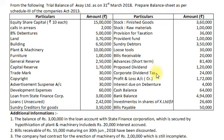Advances for Short Term will be recorded as an asset under short-term loans and advances. Proposed Dividend and Corporate Dividend Tax will be recorded on the liability side as short-term provisions. Profit and Loss Account Credit Balance will be recorded on the liability side as Reserves and Surplus. Interest Due on Debentures will be recorded on the equity and liability side as other non-current liabilities. Cash Balance and Bank Balance will be recorded as assets under current assets. Investments in Shares of X Limited is a short-term investment recorded under current assets. Bills Payable will be recorded as a liability under current liabilities as Trade Payables.